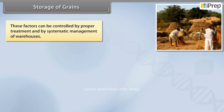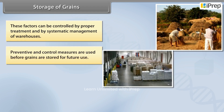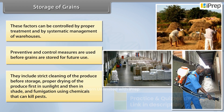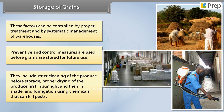These factors can be controlled by proper treatment and by systematic management of warehouses. Preventive and control measures are used before grains are stored for future use. They include strict cleaning of the produce before storage, proper drying of the produce first in sunlight and then in shade, and fumigation using chemicals that can kill pests.